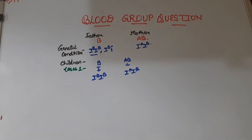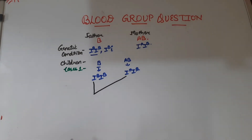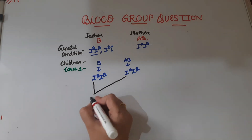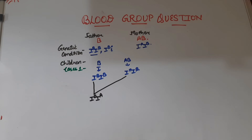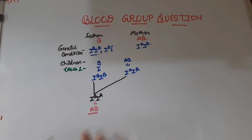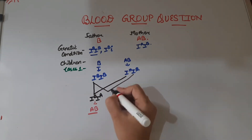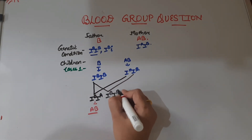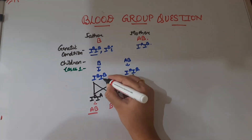When IB from the father fuses with IA from the mother, the combination is IB and IA, which expresses blood group AB. When IB from the father fuses with IB from the mother, the combination is IB and IB, which expresses blood group B. So the first two possibilities give us AB and B.